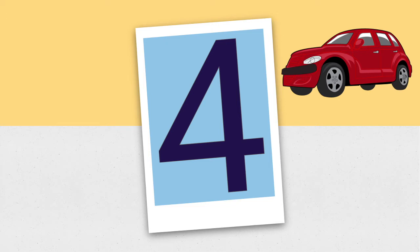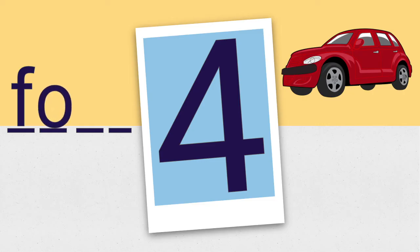Let's take a look at the number four. Just like there are four wheels in that car. The first vowel is going to say its name and the next vowel is silent. F, o, u, r spells four.